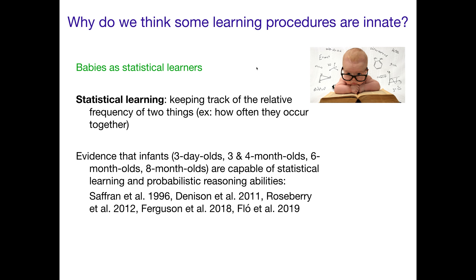If we think about procedures or abilities for learning that are innate, what kinds of things might that be exactly? What kind of ability is an innate ability that's useful for learning language? It turns out that something called statistical learning is just such a thing, and babies are really good at doing it. Statistical learning in essence is counting things — it's keeping track of the relative frequency of two things, like how often they occur together.